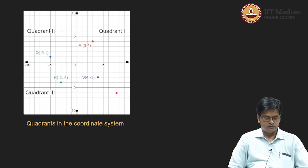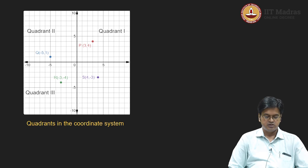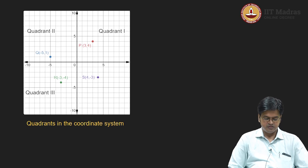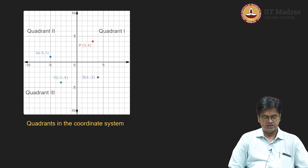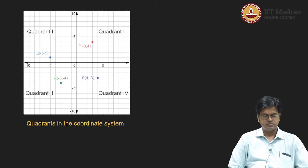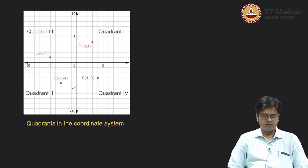In quadrant 4, point S has coordinates 4 comma minus 3, where the x-coordinate is positive and the y-coordinate is negative — such a classification comes in quadrant 4. This is how the coordinate plane is split into 4 quadrants.